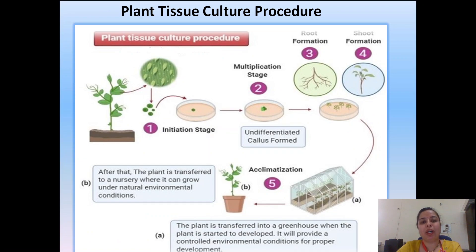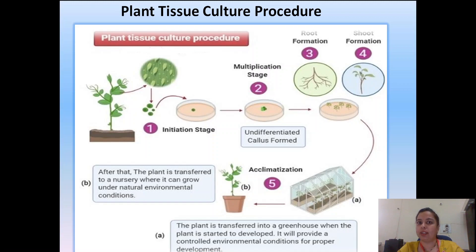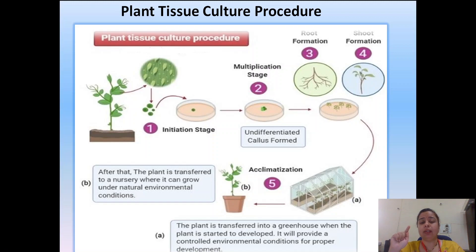In the plant tissue culture procedure, we take an explant. The explant can be a part of leaf, a node, root, seed, or embryo — any part of the plant can be taken. However, not every part of every plant is successful. For example, today we are studying the tissue culture of banana, where even the part of the fruit is successfully cultured.